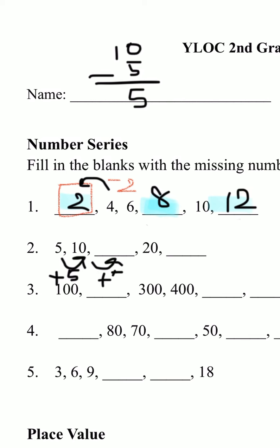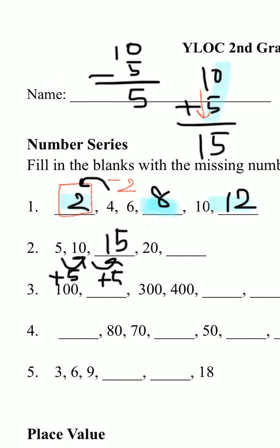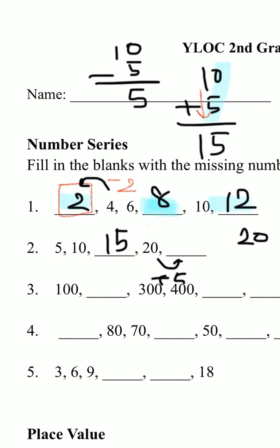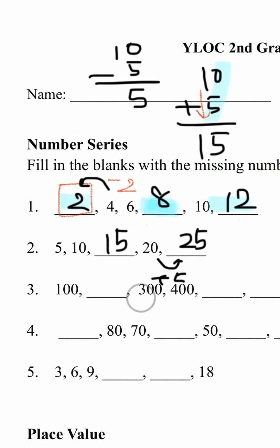So if we add 5 here, 10 plus 5 — 0 plus 5 is 5, and the 1 comes down because it doesn't have any numbers under it, so that would be 15. And then we have 20, and the next number, we also have to add 5 to 20. 20 plus 5 — 0 plus 5 is 5, and the 2 comes down. That would make it 25. So the answer is 25.